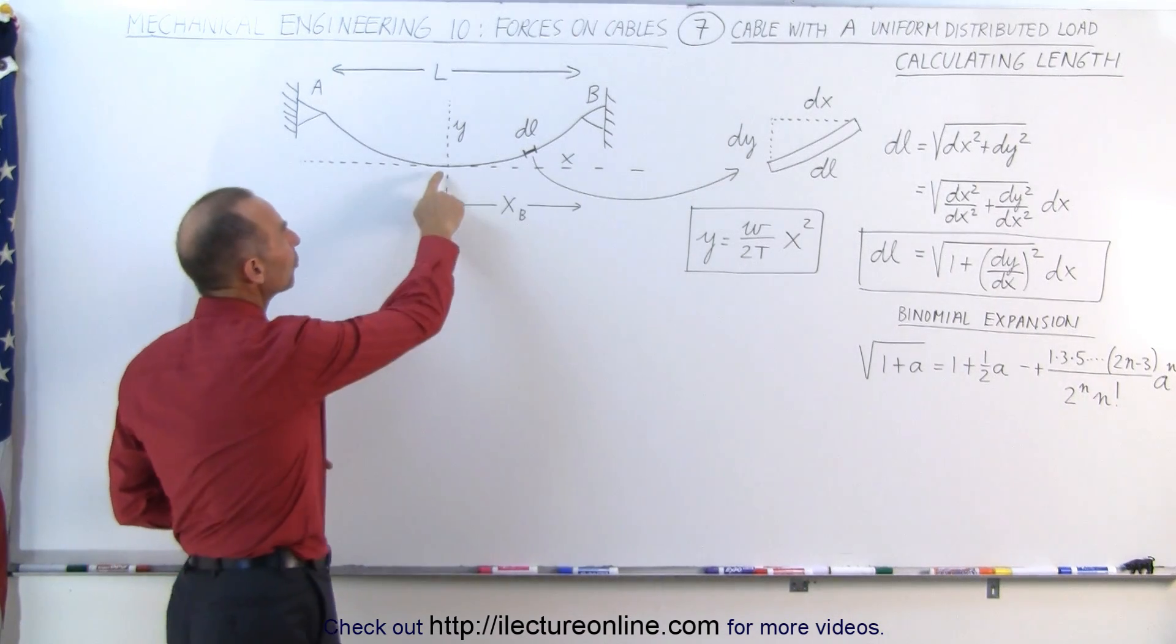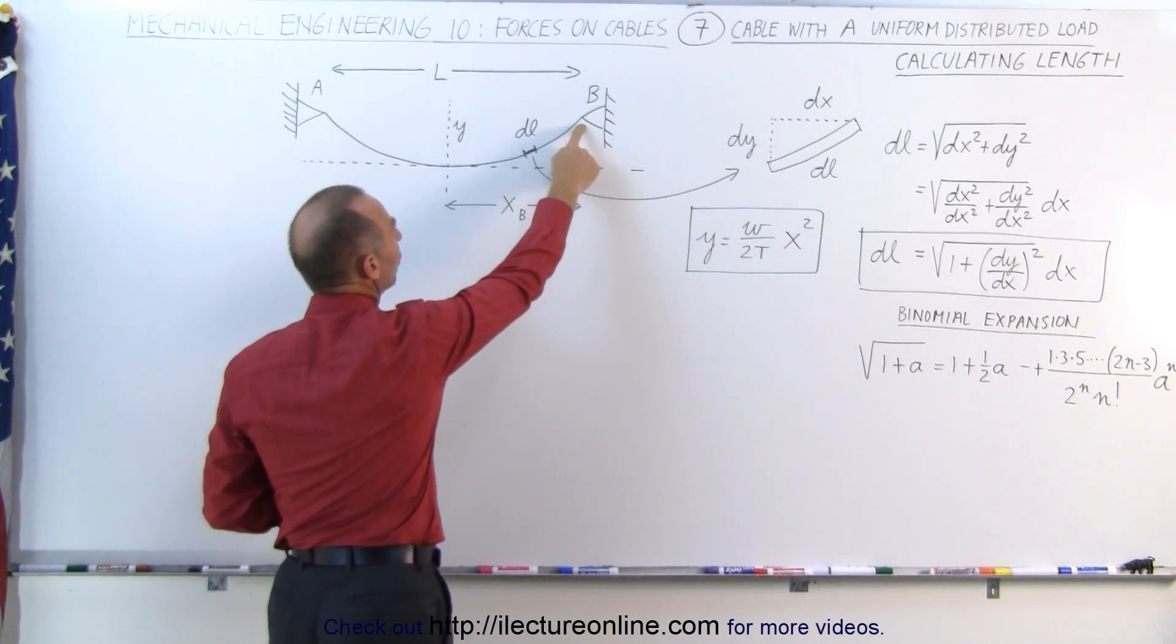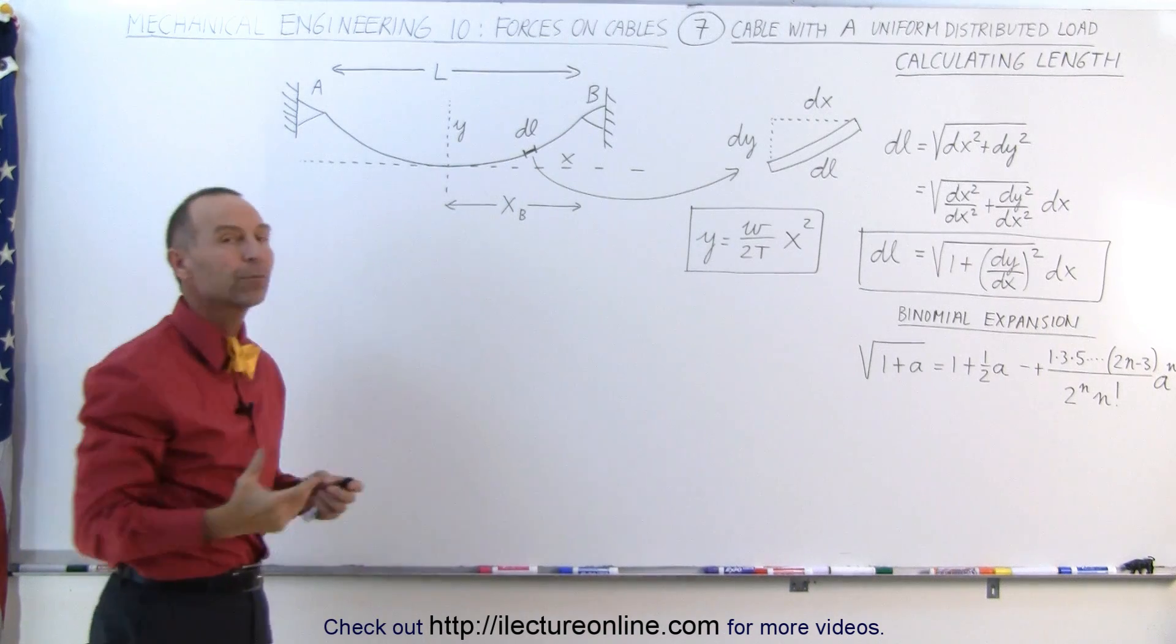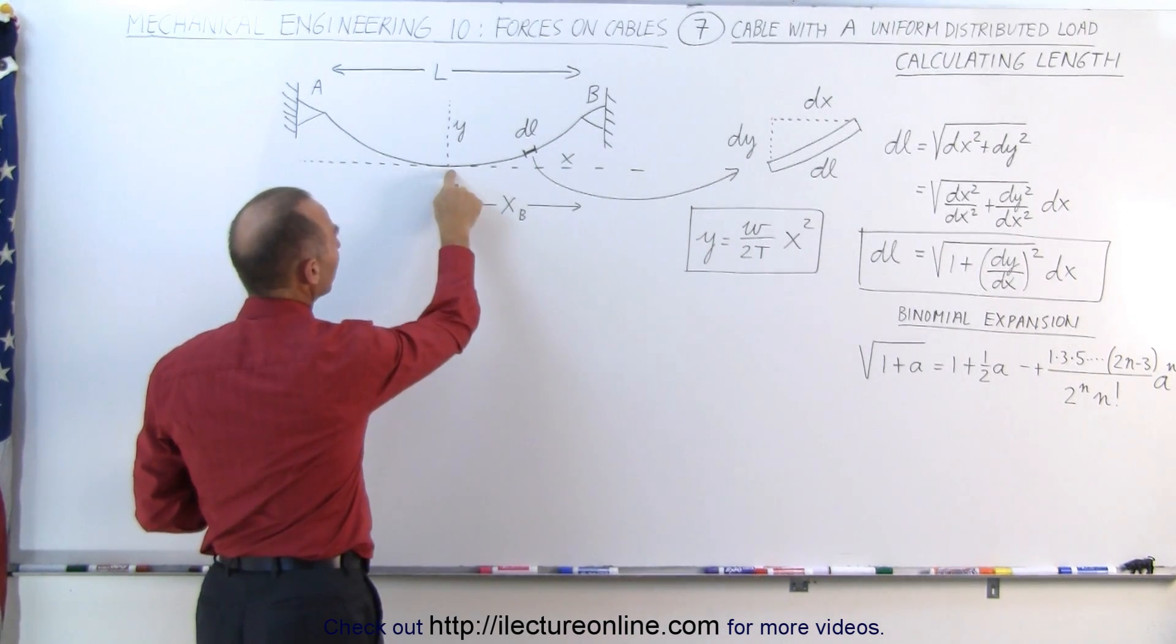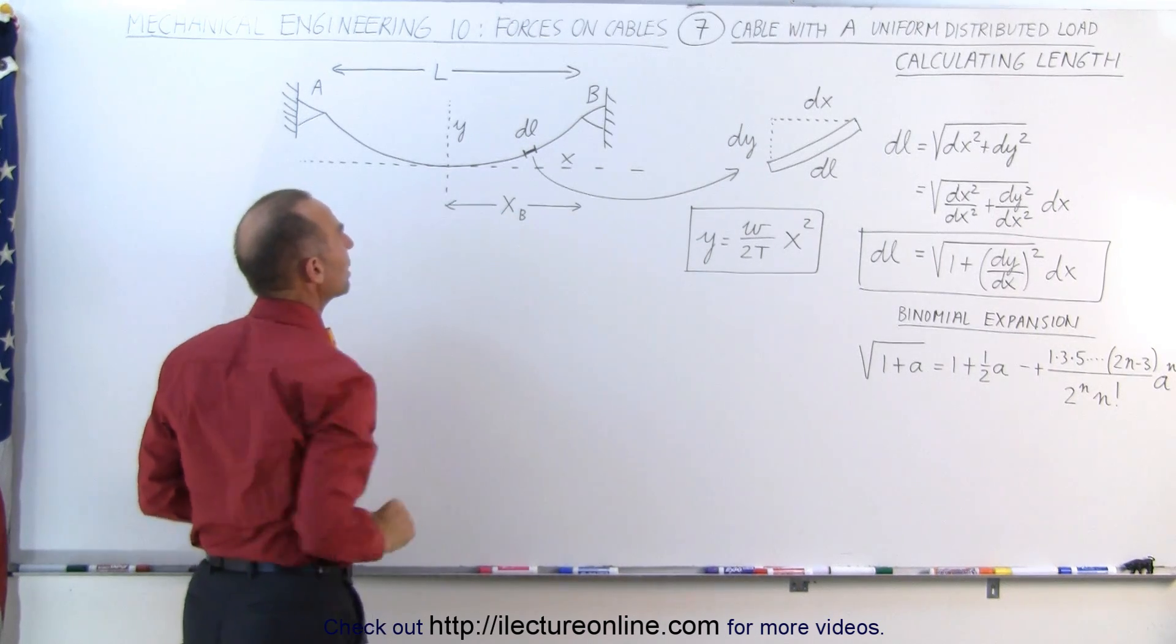We're going to calculate it from the lowest point on the cable to one of the supports, in this case we'll say support B. Therefore, the horizontal distance from where the lowest point on the cable is to support B we'll call that X sub B.